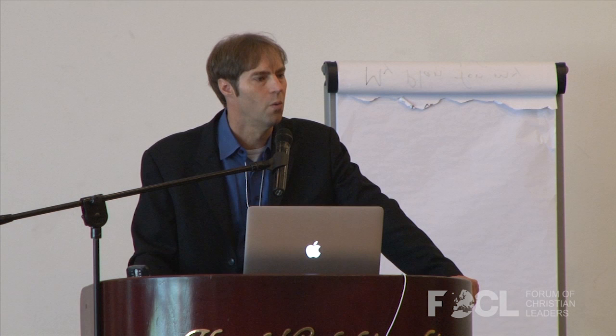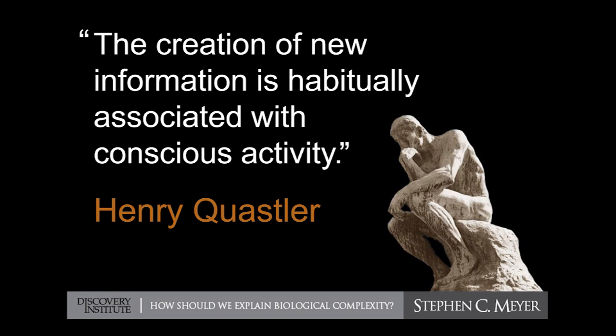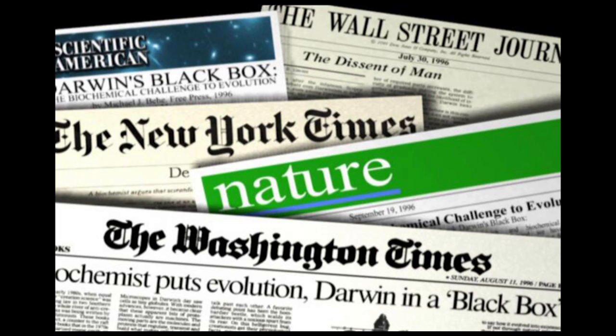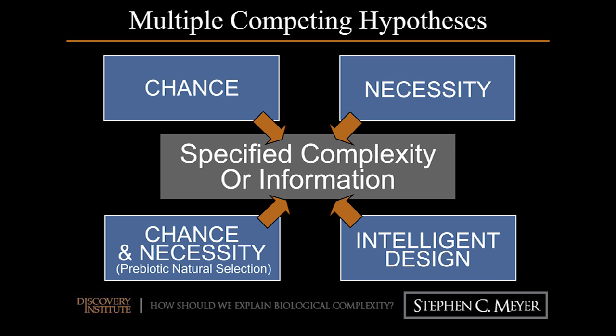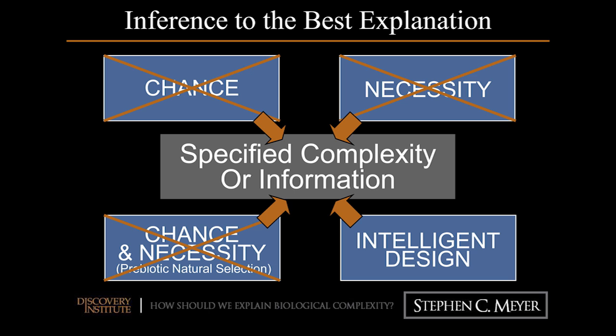I asked myself: what is the cause that produces functional digital information in our present experience? The answer is intelligence — it's mind. A pioneer in applying information sciences to molecular biology, Henry Quastler, said that the creation of new information is habitually associated with conscious activity. Our ordinary experience bears witness to exactly that: whether looking at a hieroglyphic inscription, a newspaper headline, information in a radio signal, or a computer program — whenever we trace information back to its source, invariably we come to a mind, not a material process. I concluded that it was possible, using Darwin's own method, to develop a scientific case for intelligent design.